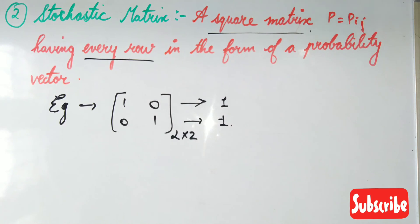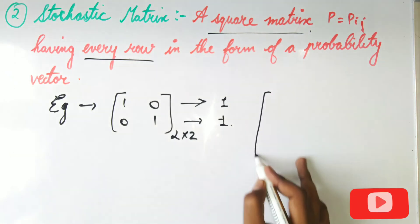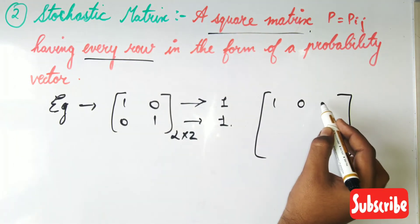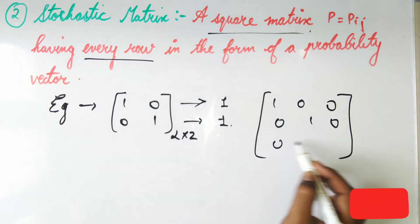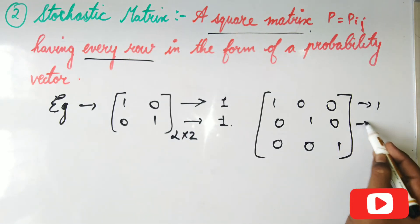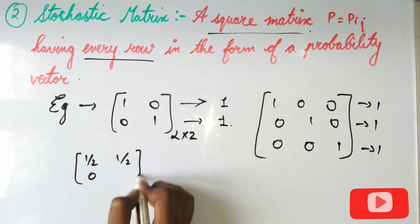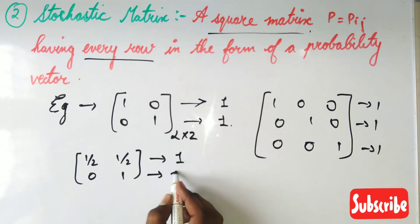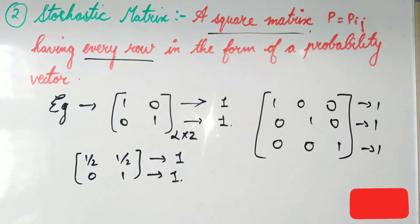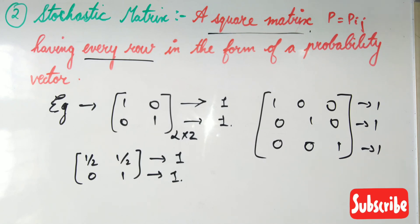So a stochastic matrix has two conditions: it must be a square matrix, and every row must be in the form of a probability vector, meaning the row sum equals unity. For the 3×3 identity matrix, the same holds — each row sums to 1. Another example: take the matrix with rows (½, 0, ½) and (1, 0, 0). Adding each row gives 1, and all entries are non-negative. So a stochastic matrix is a square matrix where every row is a probability vector.